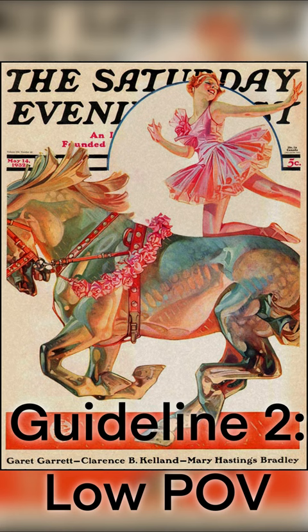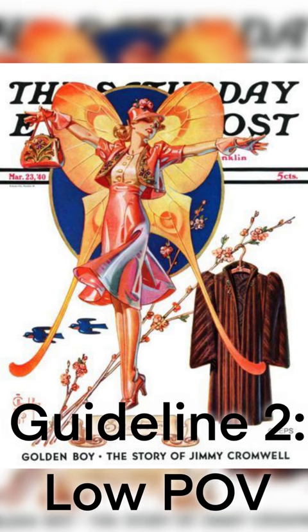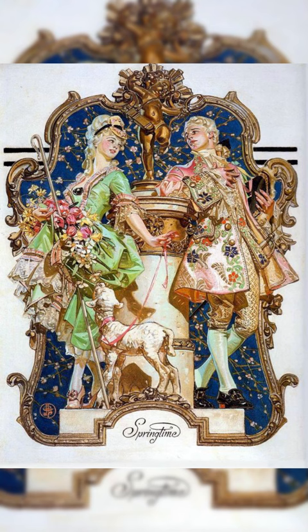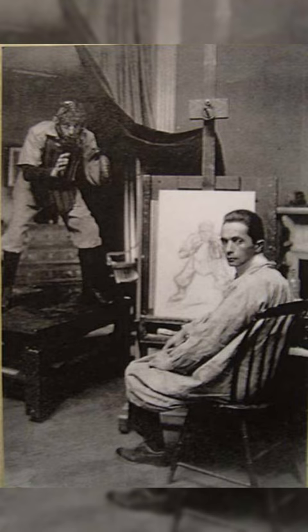Guideline 2: Often use a low point of view looking up at the models. Notice how we're looking up at many of these characters, seeing the bottom plane of their chin. Leyendecker had his models standing up on a stage in front of him, and the low point of view gives them a statuesque feeling or a sense of grandeur.